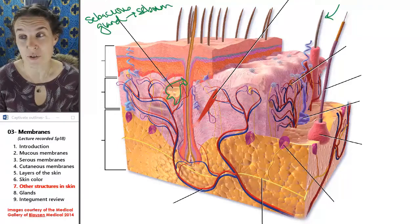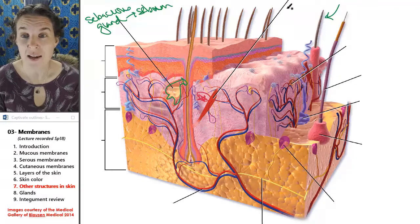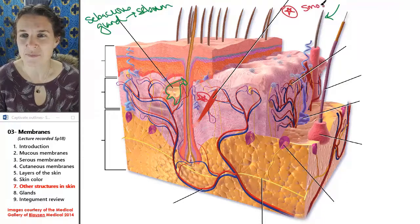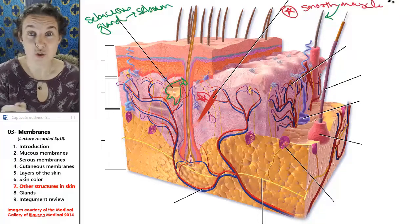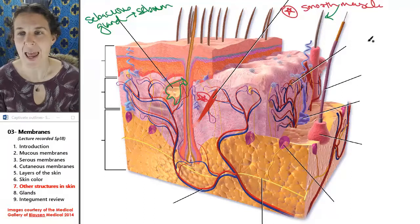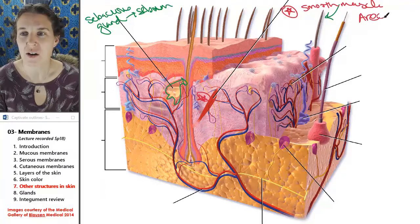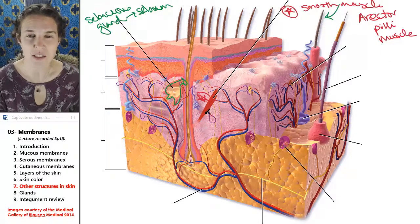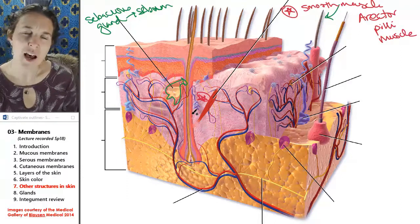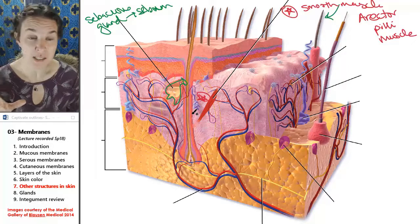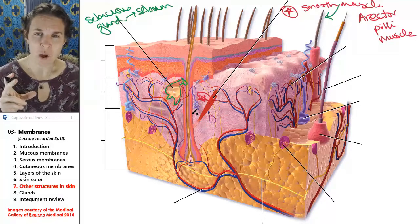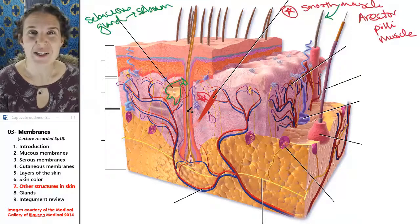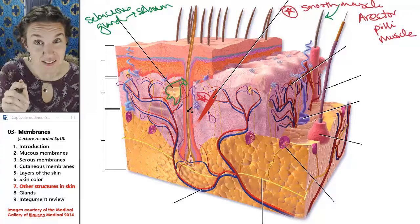Also associated with the hair follicle — this one might be one of my favorite structures ever. Does it kind of look like a muscle? It is. It's smooth muscle. It's a structure made out of smooth muscle tissue, and its name is the erector pili muscle. Muscle tissue shortens, as we know from the last lecture. What would happen if that tissue shortened? What would happen to my hair follicle?